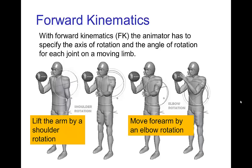In forward kinematics, the animator would determine the angle of rotation for each joint — starting with the shoulder, rotating that to the desired angle, then rotating the elbow, and finally establishing the angle of the wrist.